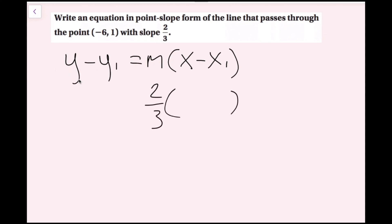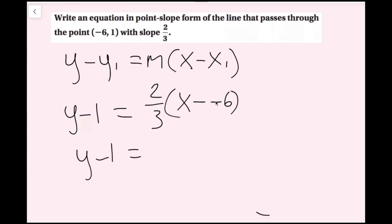The x and y without the subscript 1 just stay as x and y. I'm going to plug the ordered pair in for x1 and y1. Negative 6 is my x value for x1, and the y value of 1 goes into y1. So this is going to be y minus 1 equals two-thirds times quantity x minus negative 6. Since minus a negative is the same as adding, I can rewrite this as y minus 1 equals two-thirds times x plus 6. Now we've successfully written this equation in point-slope form.